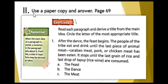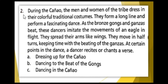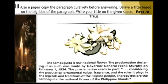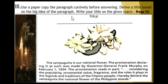For your activity, use a paper copy and answer the activity on page 69. Please read the instructions carefully and answer items one and two. For activity three, use a paper copy and read the paragraph carefully before answering. Derive a title based on the big idea of the paragraph and write your title in the given space. This activity can be found on page 70.